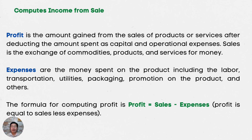Talking about how to compute income from sales, we have here profit. Profit is the amount gained from the sales of products or services after deducting the amount spent as capital and operational expenses. Sales is the exchange of commodities, products, and services for money. Expenses are the money spent on the products, including labor, transportation, utilities, packaging, promotion, and others. The formula for computing profit — take note: Profit equals Sales minus Expenses.